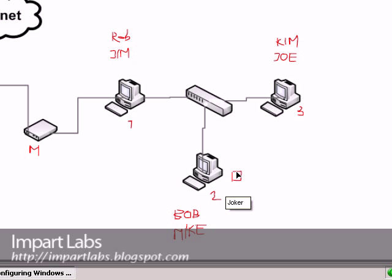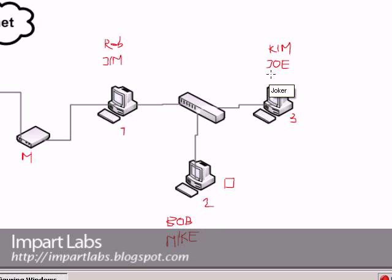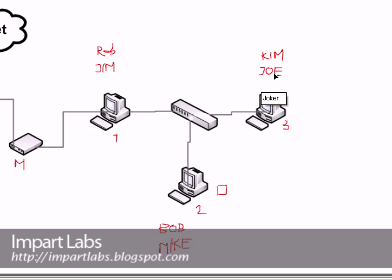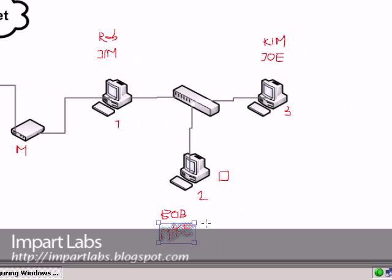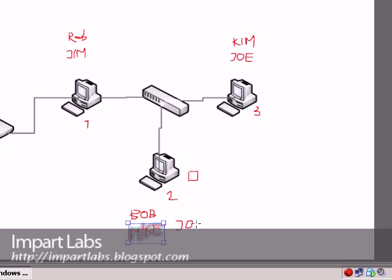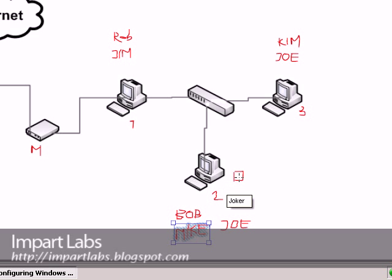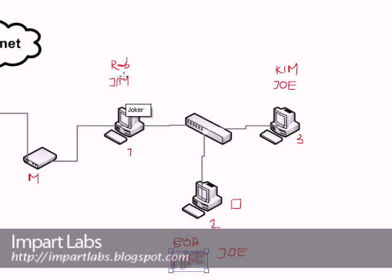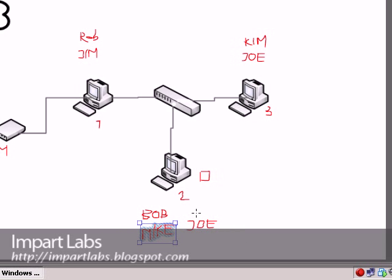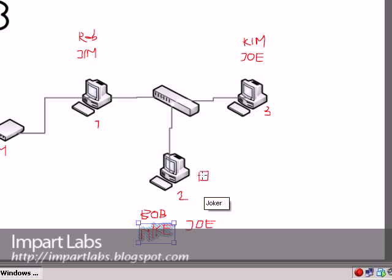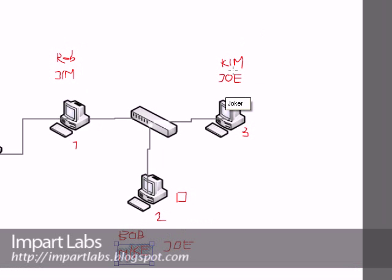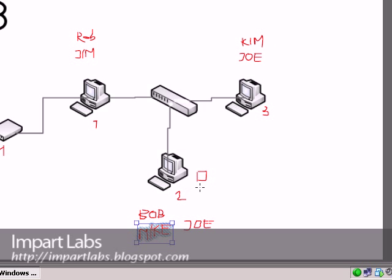What happens is that only users who have their user account added to that specific workstation will have access. Meaning, if Joe wants to have access to a folder shared on Client 2, Joe's user account with the same password has to be added to the users on Client 2. So the only people with access would be Bob, Mike, and Joe — while Jim, Rob, and Kim, since they are not in the users list of that computer, don't have access. If you want someone to have access, simply add that user with their password; if you don't want them, just don't add them.